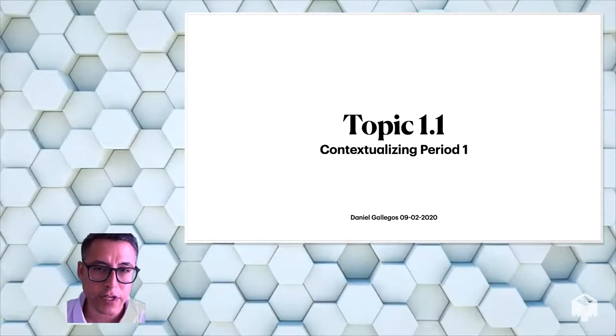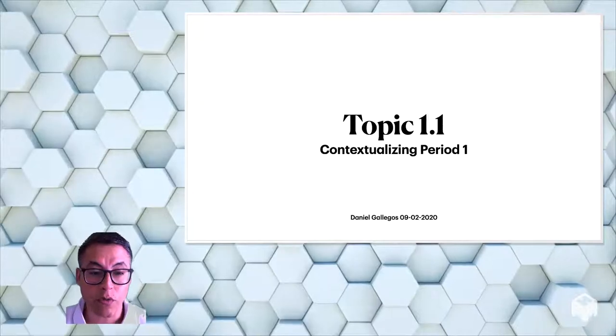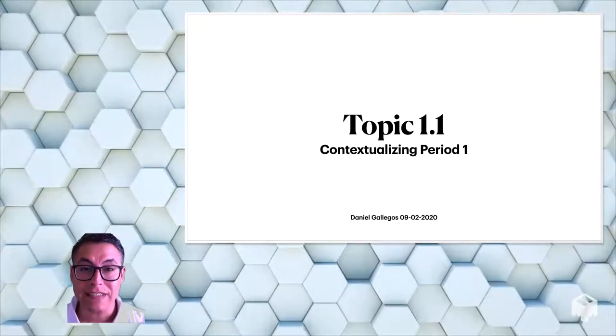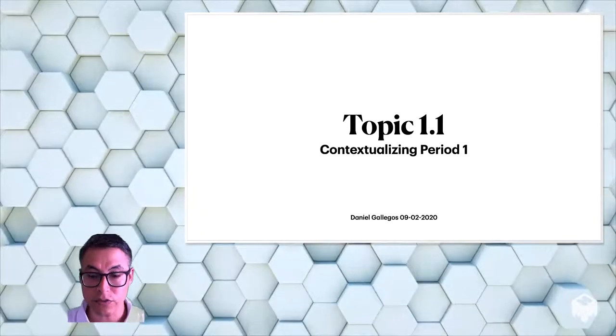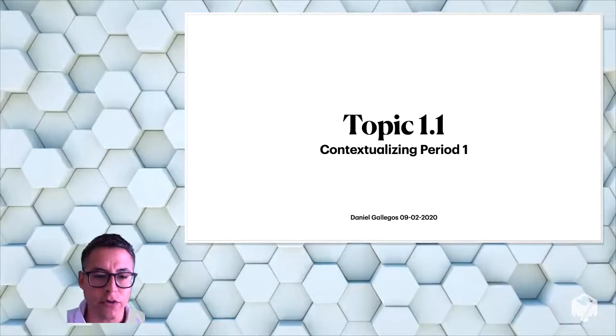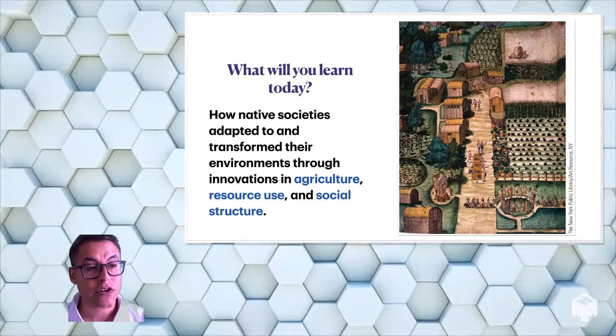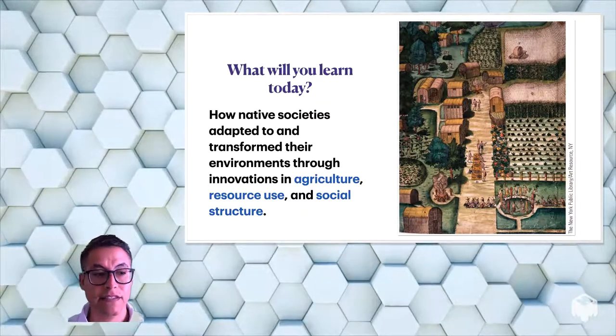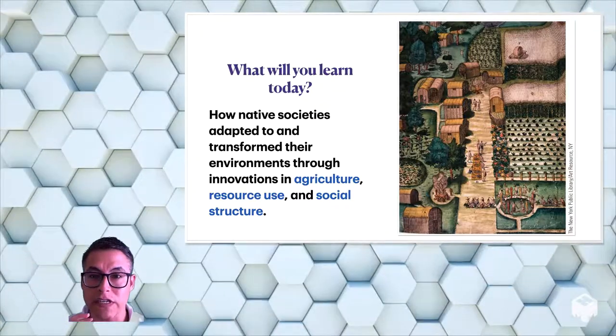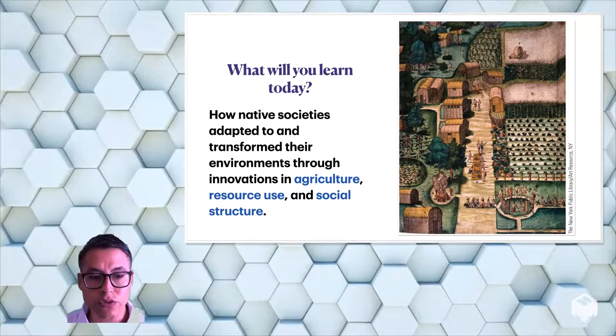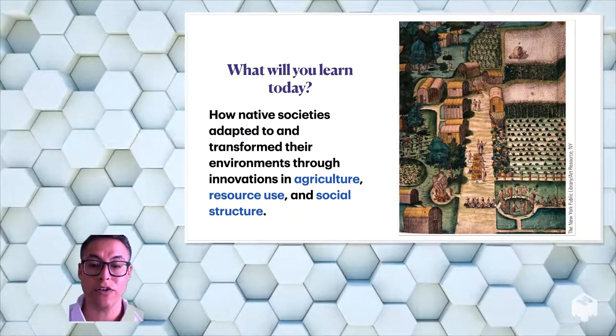Alright everybody, this is the first topic that you learn content for. This is topic 1.1 and we're going to be contextualizing the first time period that we're going to study, which is 1491 to 1607. So what are you going to learn in this lecture? The first thing you're going to learn is how Native American societies adapted to their environment and transformed their environment through innovations in agriculture, resource use, and social structure.